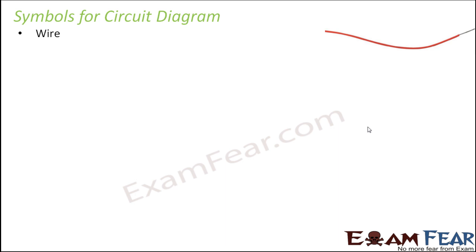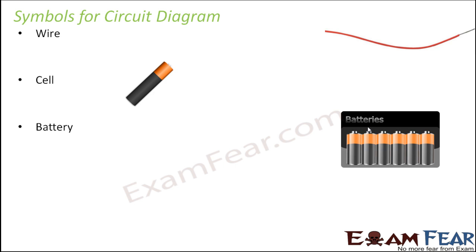All circuit elements are connected through wires. The cell is another important element because it is the source of electricity — it generates electricity. A battery is nothing but a combination of cells. A cell has a particular limit of electricity generation, so when we need more current, we need more power, and at that point many cells are connected together to form a setup called a battery.